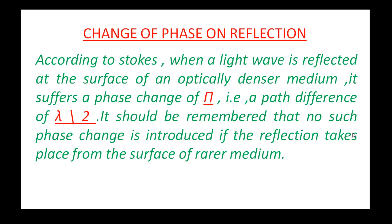The formula is: path difference delta is equal to (2 pi by lambda) into path difference. If the phase changes by pi, the path difference changes by lambda by 2. When phase changes by 2 pi, the path difference changes by lambda — according to that formula.